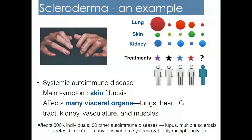Here's an example: scleroderma, a chronic progressive disease. Bringing back Dr. Osler's words, scleroderma is only one such systemic autoimmune disease — there's also lupus, multiple sclerosis, IBD, Crohn's, and of course cancer, which we know to be a very successful example where historically we used to think of it as one disease, but there's so much heterogeneity across individuals.